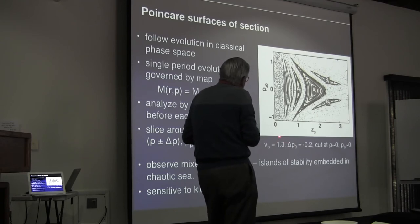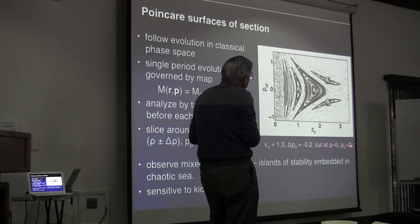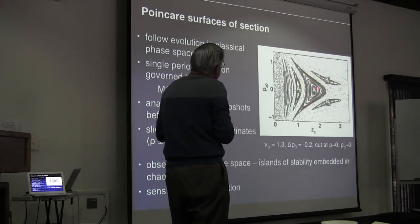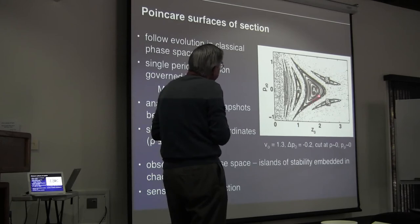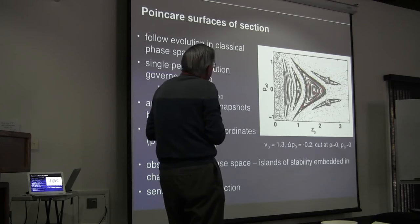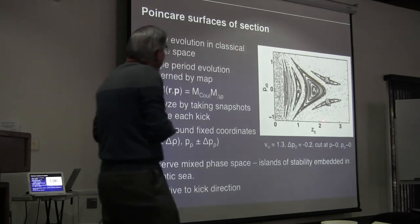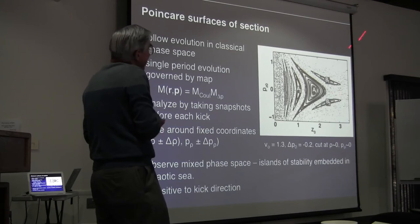Here is what you see for a scaled kick frequency of 1.3 — where you have good stabilization — with a kick strength of 0.2, sliced at rho near zero and p_rho near zero. Plotting the z-component of momentum versus position, you see a series of dark regions called islands of stability. If a phase point starts within one of these islands, as the kicks proceed it follows a path around one of these closed lines — it remains trapped within the island and can survive many, many kicks. If the phase point starts outside, it undergoes a random walk and is ionized. So you have these islands of stability embedded in a chaotic sea.